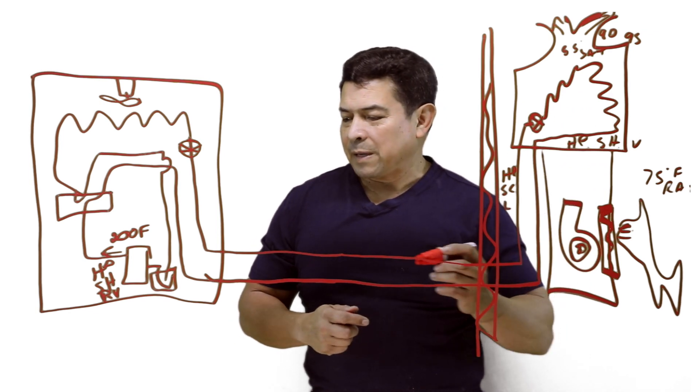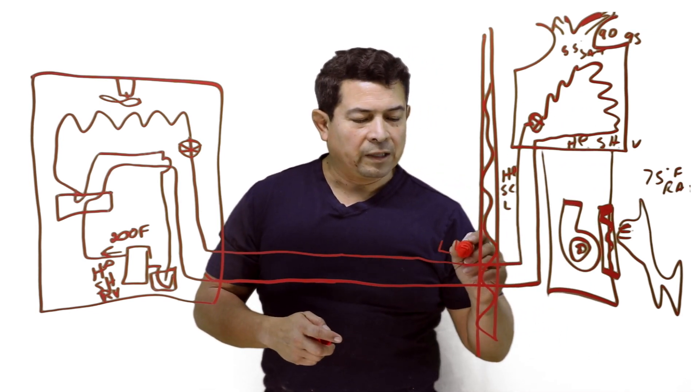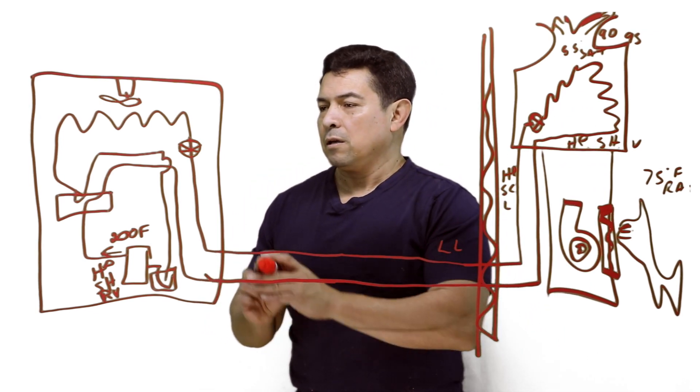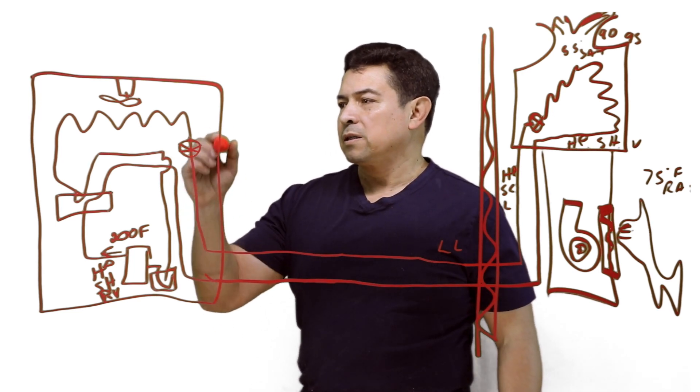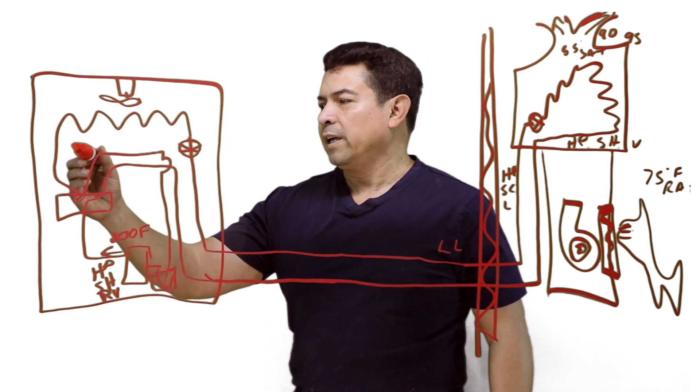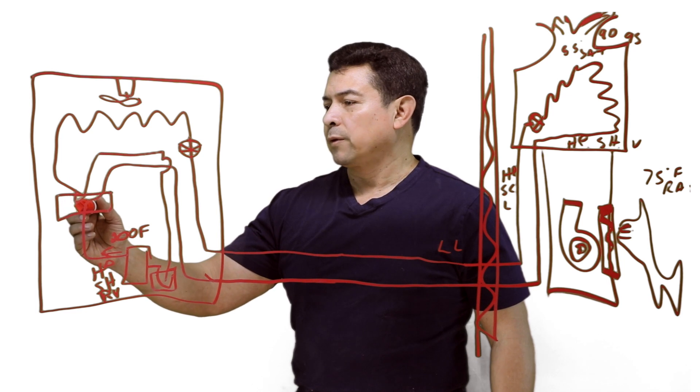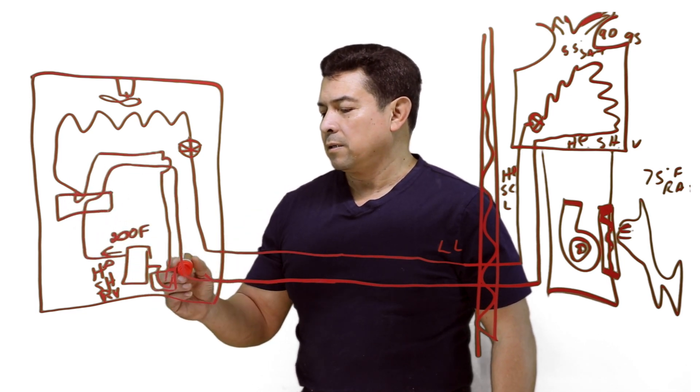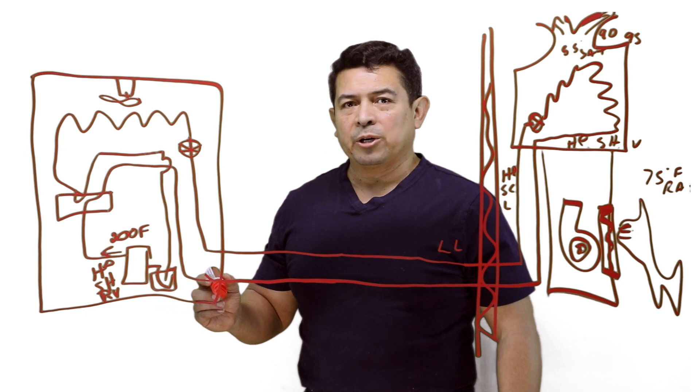The refrigerant has condensed, turned into a liquid, comes back through my liquid line, goes through this metering device, creates a pressure drop, and brings it back to the reversing valve, comes back to the accumulator, and back to the compressor.